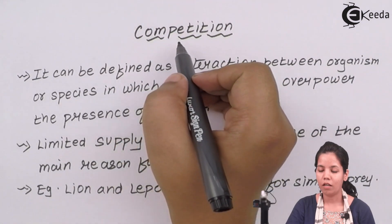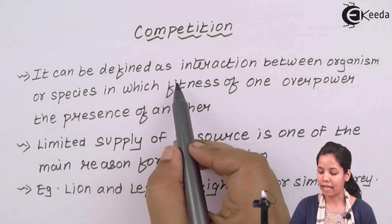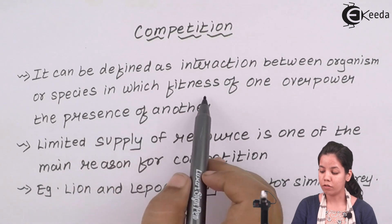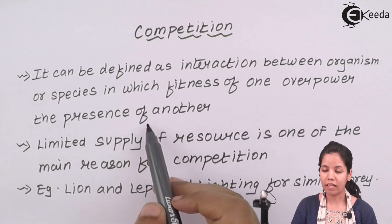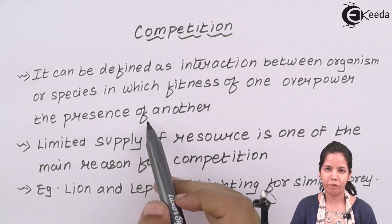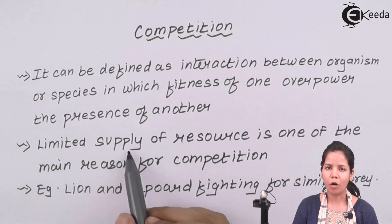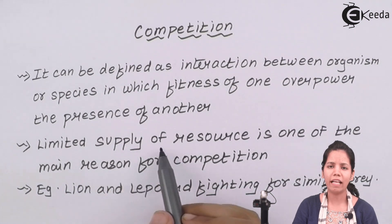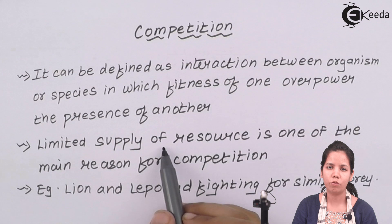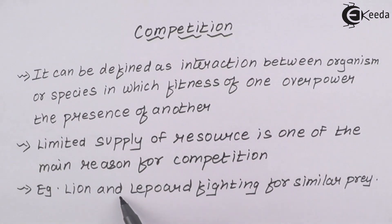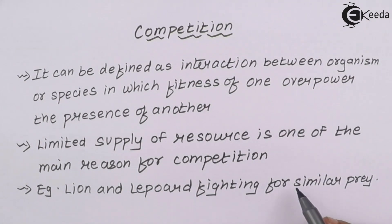Competition can be defined as an interaction between organisms or species in which the fitness of one overpowers the other in the presence of another. It means when two different organisms or species are fighting, one is always stronger and the other is weaker. This competition in the animal kingdom is seen due to a limited amount of food resources. An example would be a lion and a leopard, both carnivorous, fighting for a common prey such as a deer or rabbit.